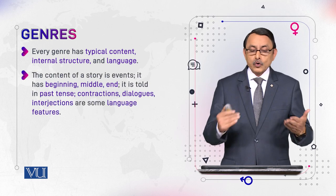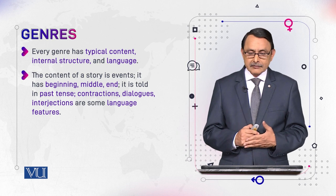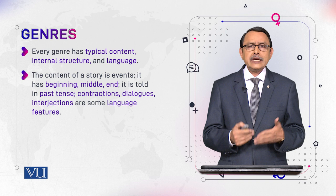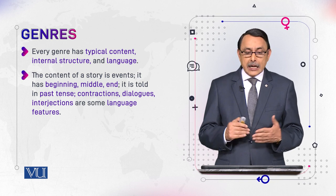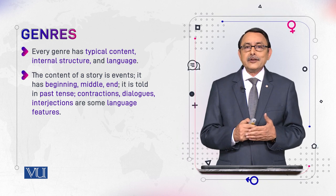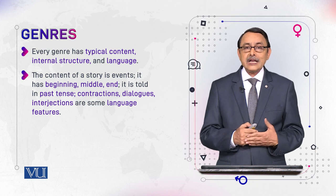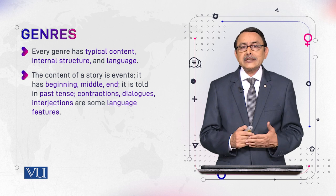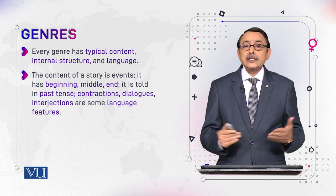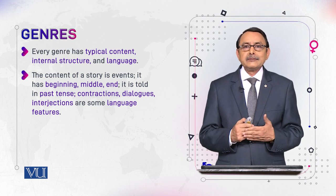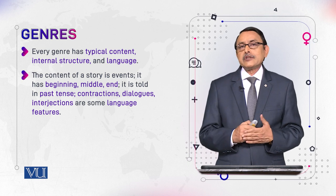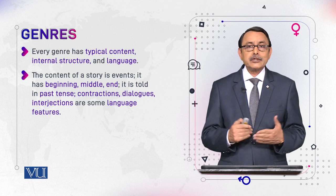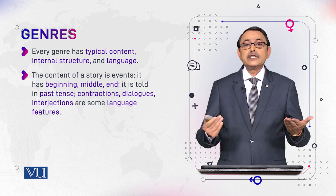For more examples, the content of a story is events. It has a beginning, middle, and end — that is its structure. It is told in past tense, and there are contractions and dialogues. All these are language features which are typically part of a story. So a story is a Genre.